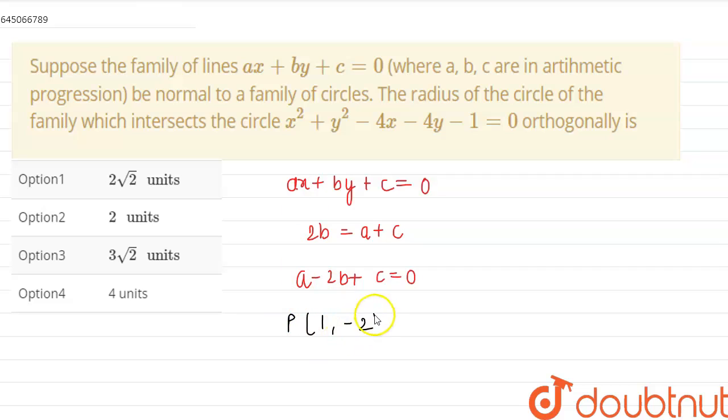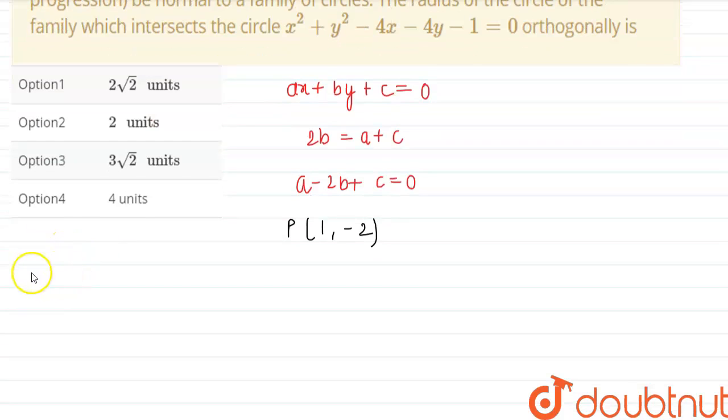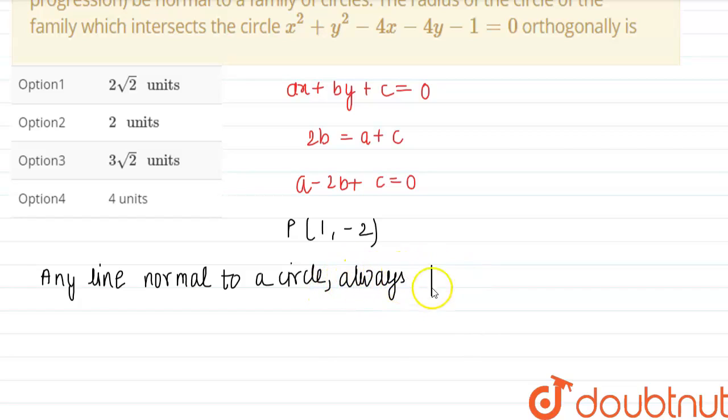The point is (1, 1/2) and this is normal to a circle and any line normal to a circle always passes through the center so this means that (1, 1/2) is the center of the circle and center of the circle is written as minus g comma minus f.